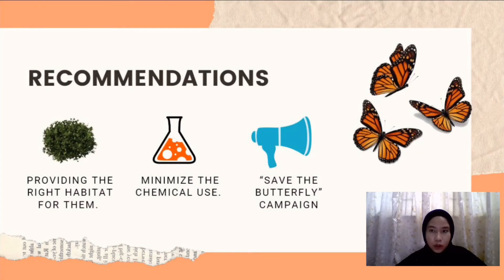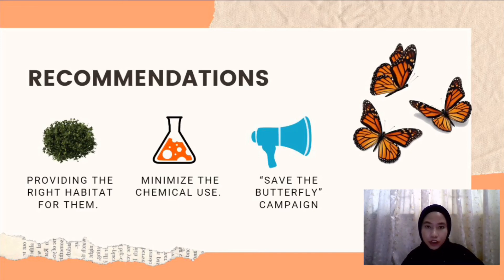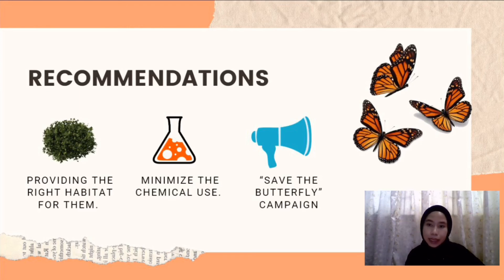In order to acknowledge people on the importance of butterflies and to save butterfly habitats in urban parks, certain recommendations are necessary: first, providing the right native plant species according to the butterfly species, as these play a key role through the stages of the butterfly life cycle. Second, minimize the use of chemicals to protect butterflies and secure their habitat, as uncontrolled use of chemicals can destroy butterfly populations. Lastly, a 'Save the Butterfly' campaign can help bring back butterfly numbers and raise public awareness about their importance to our ecosystem.